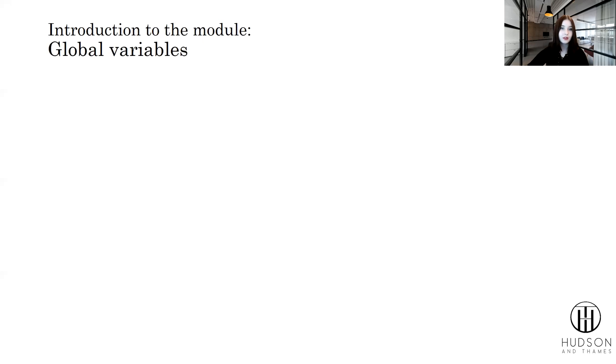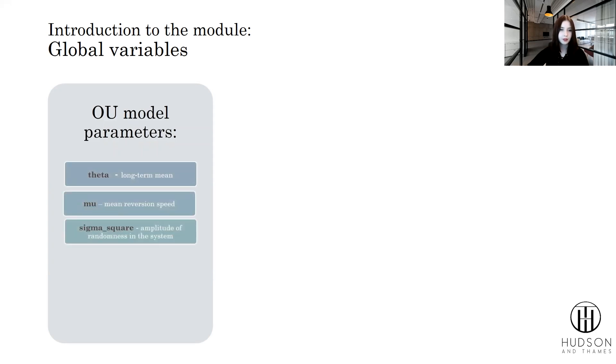The first part would be the global variables. We can logically divide them into three parts. First part is OU model parameters with long-term mean, mean reversion speed, amplitude of randomness, delta between observations, optimal ratio between two assets, and maximum log-likelihood parameters.